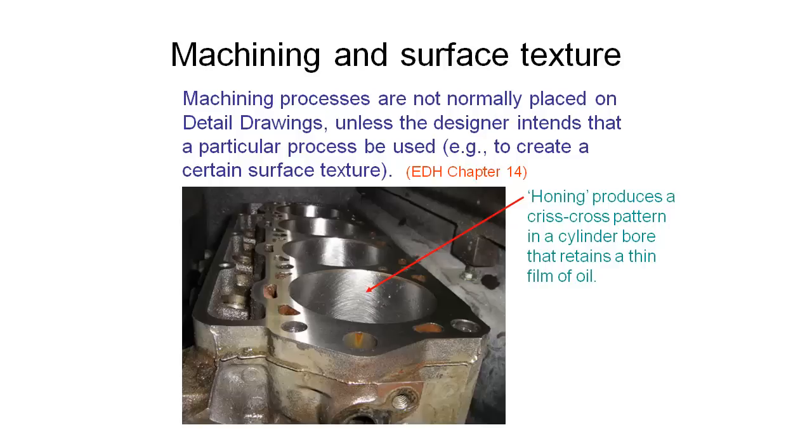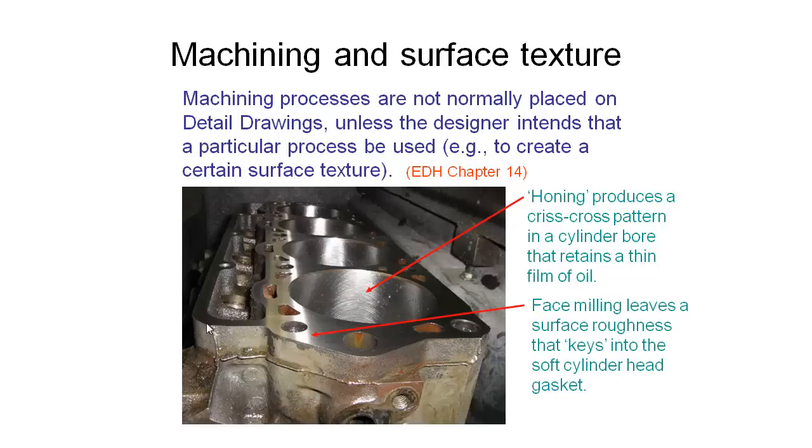Another example is the top of this cylinder here where it mates with the head. In between the cylinder block and the cylinder head we usually have a gasket, and that gasket needs to clamp up very tightly and stay put so it doesn't blow out under the influence of the pressures developed inside our cylinder when we get the combustion. Usually we use a face milling operation and we intentionally leave this surface rough with some bigger scratch marks. This helps key into the head gasket to stop it moving around under those high loadings.